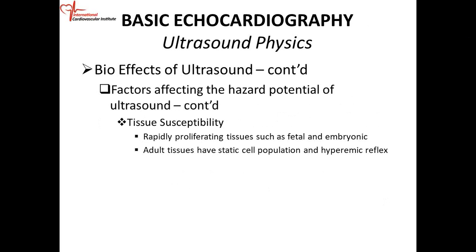Rapidly proliferating tissues such as fetal and embryonic tissues are more susceptible to injury because of rapid cell growth. Adult tissues have a static cell population and what we call a hyperemic reflex — if you heat up the tissue, blood vessels dilate and you have increased blood flow. So there is less problem with heating of the tissue because you can dissipate the heat by increasing blood flow.